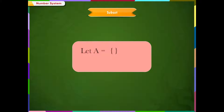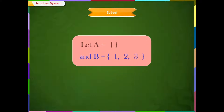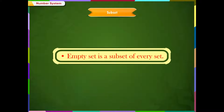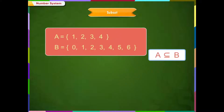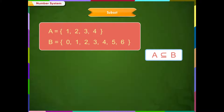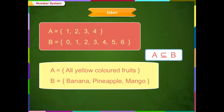If A is an empty set and B is equal to {1, 2, 3}, there is no element in set A that is not in set B, so set A is a subset of set B. Empty set is a subset of every set. If all elements in A are in B, then A is a subset of B, meaning A is contained in B. If all elements in B are in A, then B is a subset of A, meaning B is contained in A.